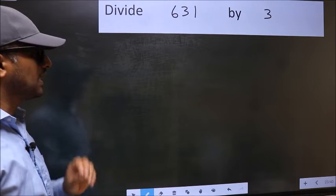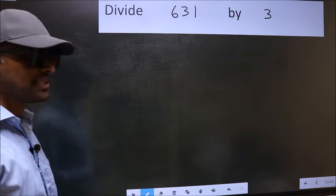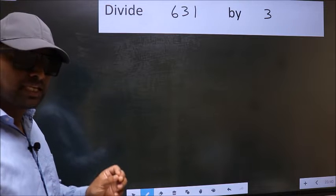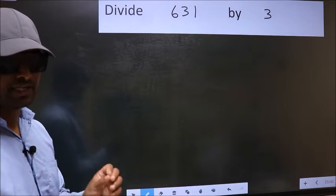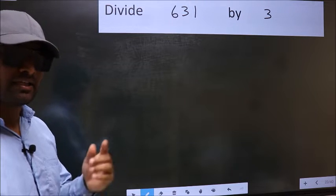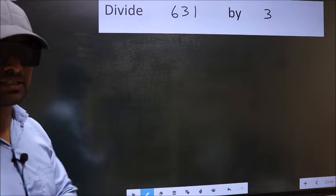Divide 631 by 3. While doing this division, many do this mistake. What is the mistake that they do? I will let you know. But before that, we should frame it in this way.